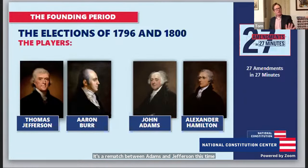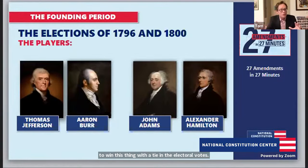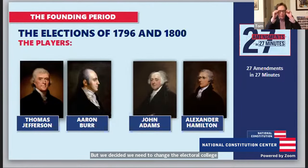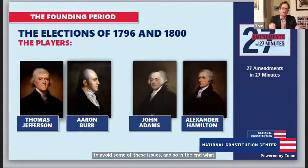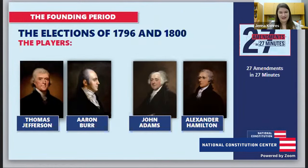Rather than stepping aside — because everyone knew Jefferson was at the top of the ticket — Burr said he had the electoral votes to win. With the tie going to the House, controlled by the opposing Federalists, Burr tried to drum up enough support to seize the presidency. Ultimately the House selected Thomas Jefferson. We decided we needed to change the Electoral College to avoid these issues. With the 12th Amendment, electors still had two votes, but one specifically for president and one specifically for vice president. These amendments came as responses to court decisions and historical events.